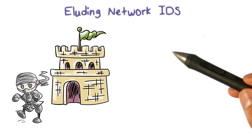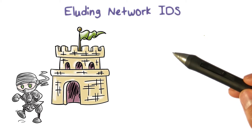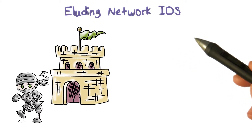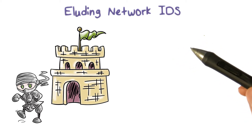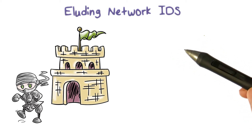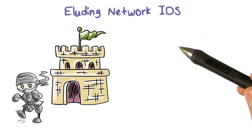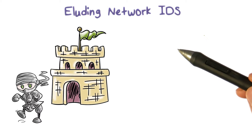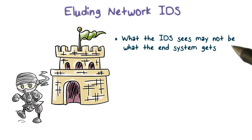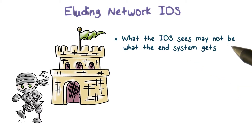Therefore, in order for the IDS to detect the intrusion that's happening at the end host, it must see the same traffic as the end host. However, this is not always the case. An attacker can exploit this in order to evade the IDS.